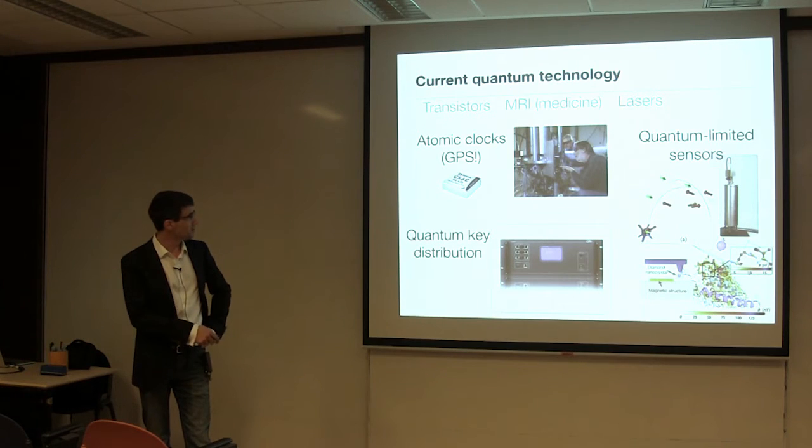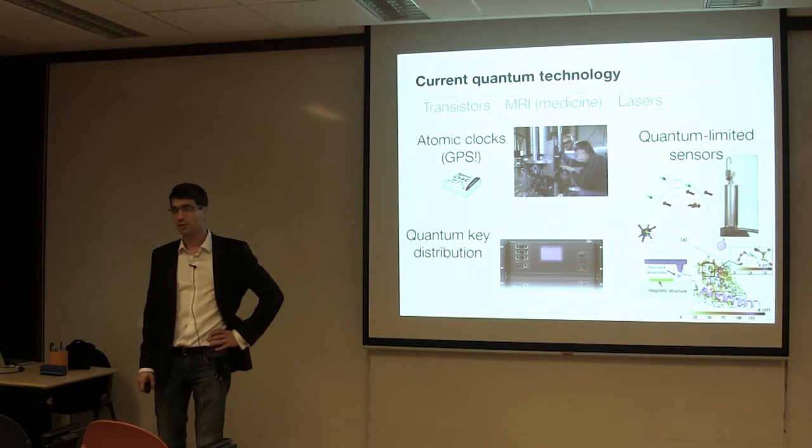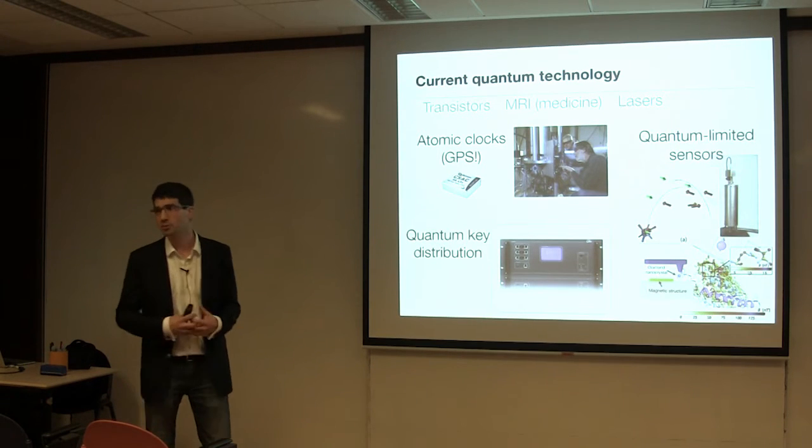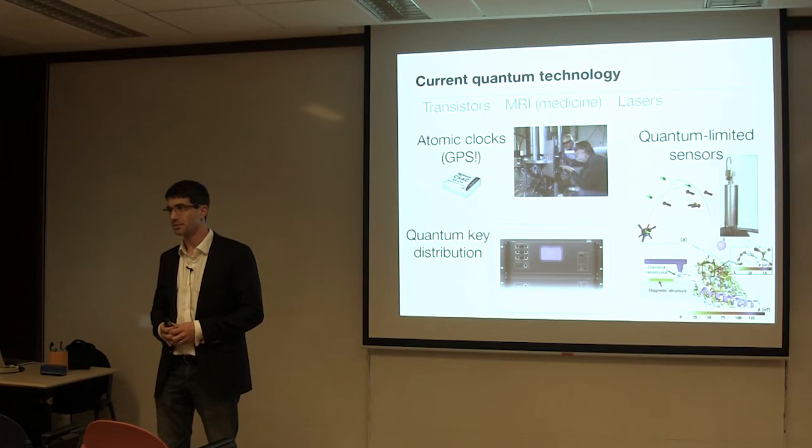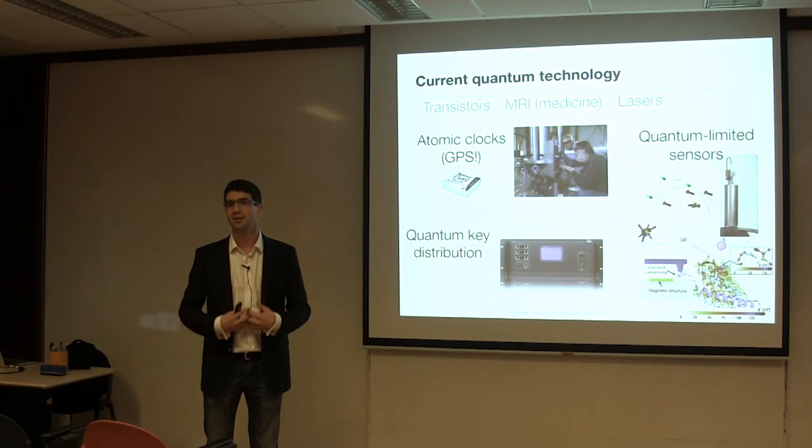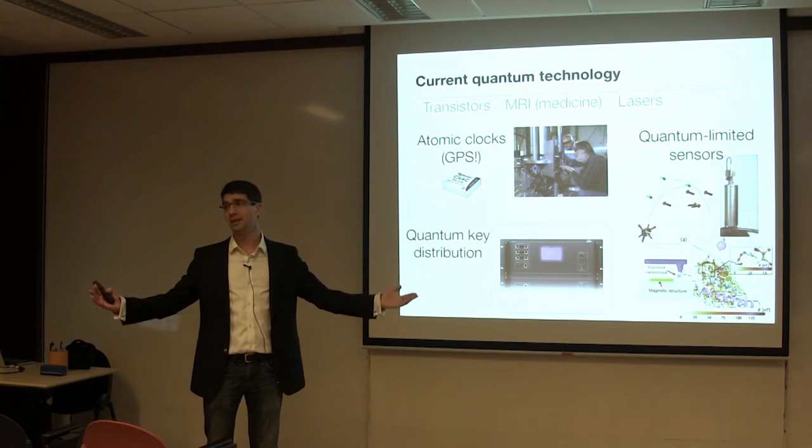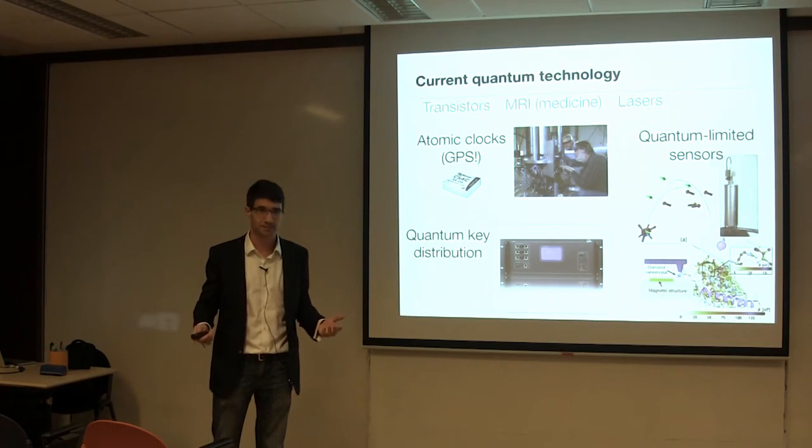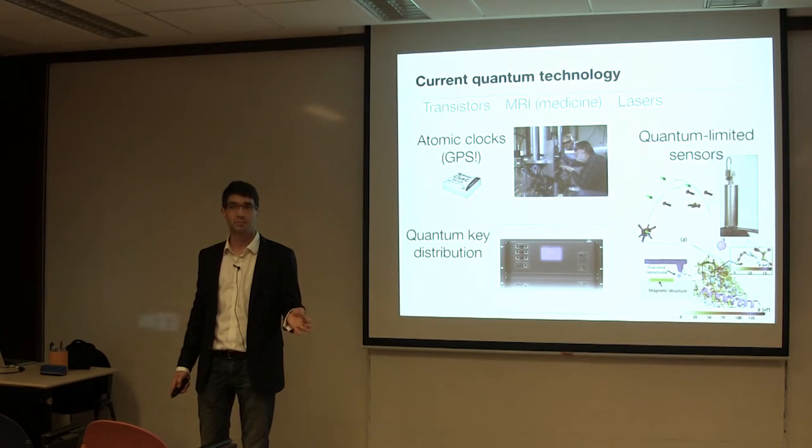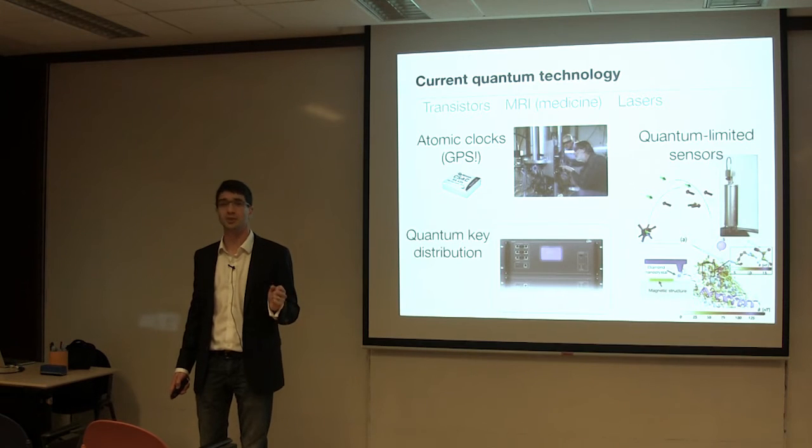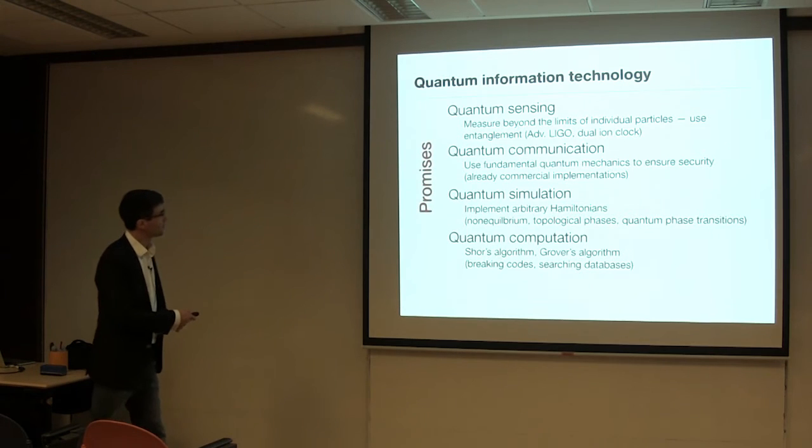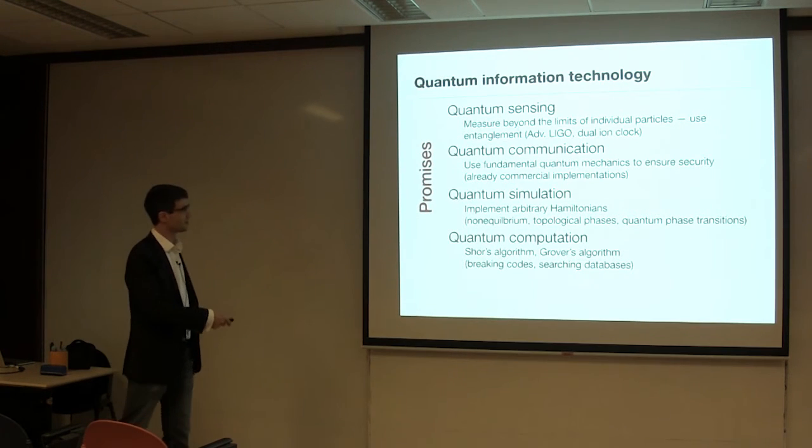All of these devices have commercial applications and even, right now, commercial implementations. You can buy these things. Actually, you can buy a chip scale atomic clock, the CSAC, for $300 online. You know, if you want them, you can, I suppose. The companies building quantum limited sensors exist. Their products are pretty nascent. Quantum key distribution is a little bit in between in terms of its level of maturity.